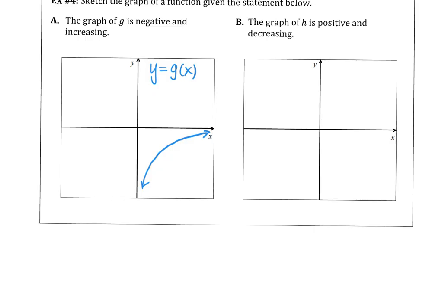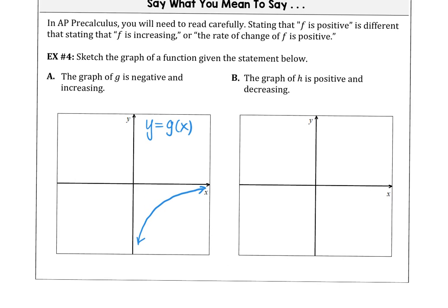And then for the last example, we want to draw the graph of h. The graph of h is positive and decreasing. And for the function to be positive, that means our graph has to lie above the x-axis and decreasing. So the y values are going down as the x values increase. Or as the input increases, the output decreases. So this is our example for y = h(x).